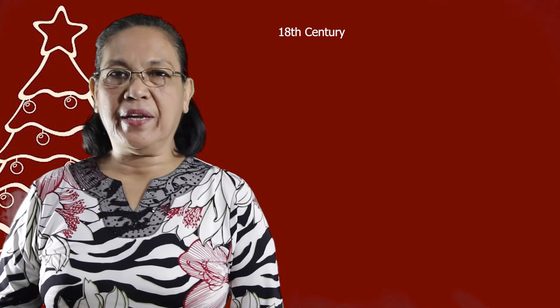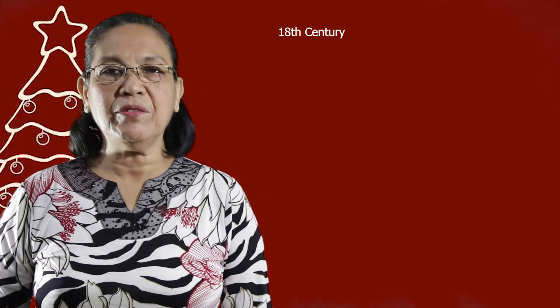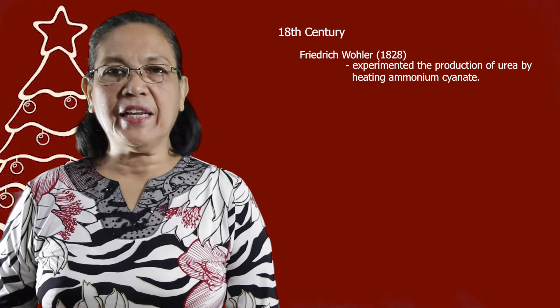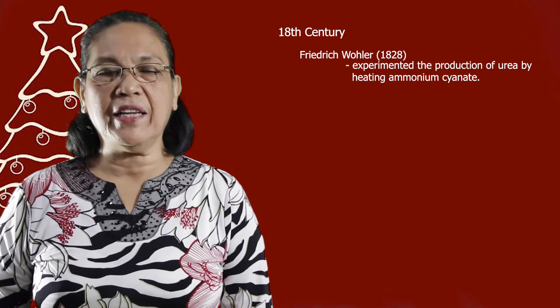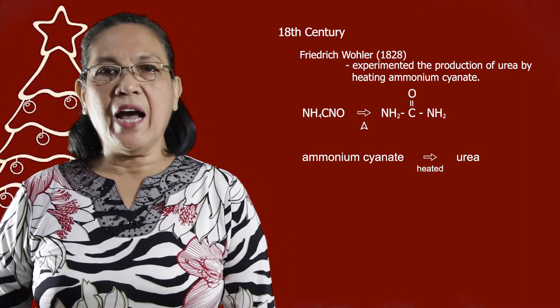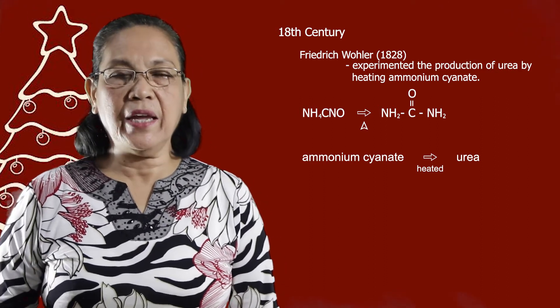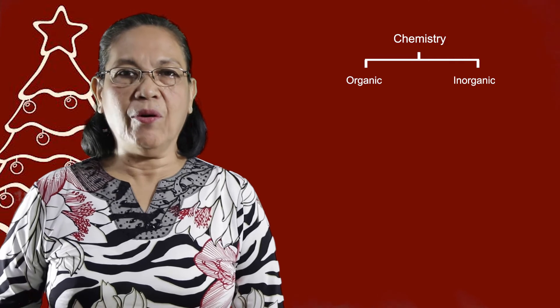Let's have a brief history of Organic Chemistry. In the 18th century, it was believed that a vital force was needed in order to form the compounds found in living cells, which are the organic compounds. However, this belief was overthrown by Friedrich Wöhler, who made an experiment in 1828, when he produced urea, which is commonly found in the blood and in the urine, when he heated ammonium cyanate, which is an inorganic compound. After Wöhler's work, he was able to form other organic compounds, and this led to the subdivision of Chemistry, which are now inorganic and organic chemistry.